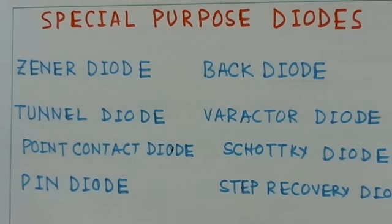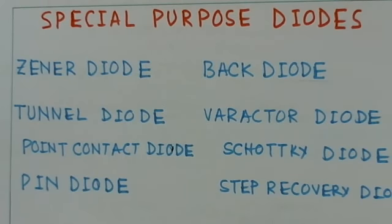This video is on special purpose diodes. Eight different types of diodes are considered. A brief outline of these diodes is given, focusing on the following points for each: the symbol, alternate name and material used, and the type of bias used. Number two is characterization or any special behavior, the third is any special term used in the diodes, and the fourth is its applications.